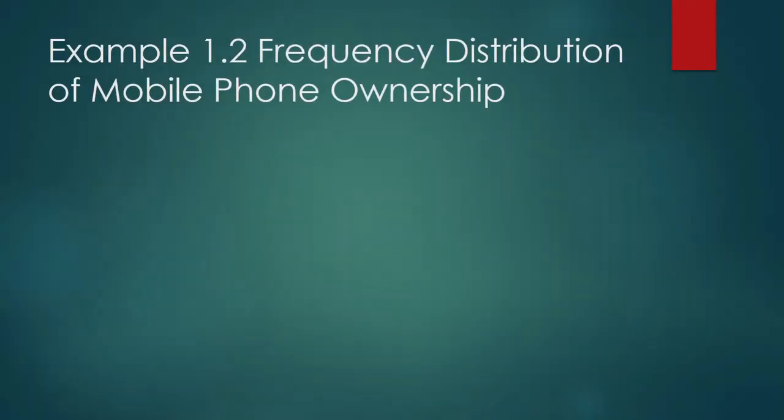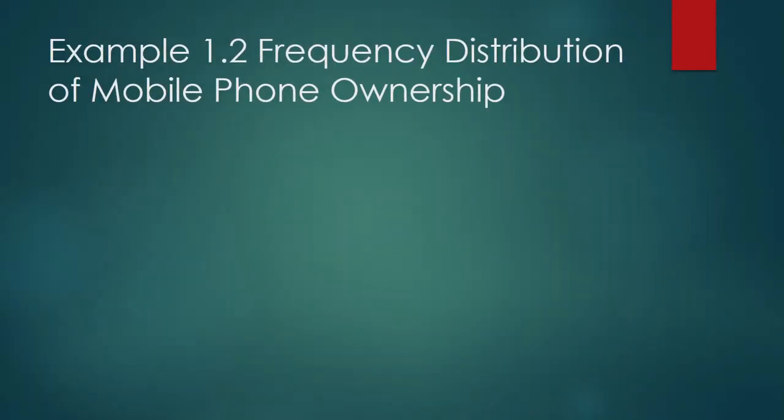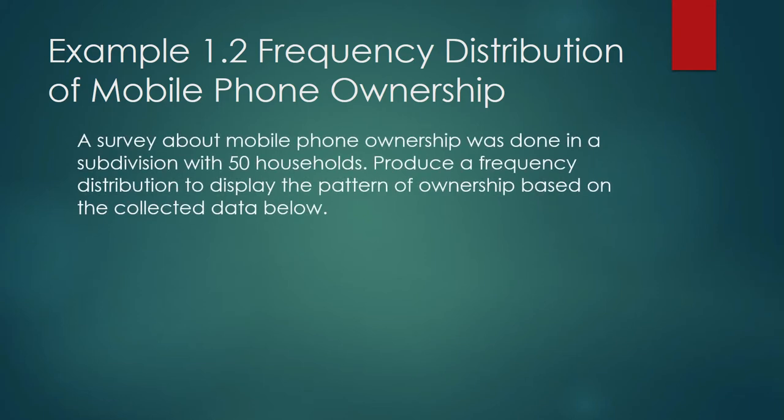Discovering Patterns Example 1.2 Frequency Distribution of Mobile Phone Ownership. A survey about mobile phone ownership was done in a subdivision with 50 households. Produce a frequency distribution to display the pattern of ownership based on the collected data below.